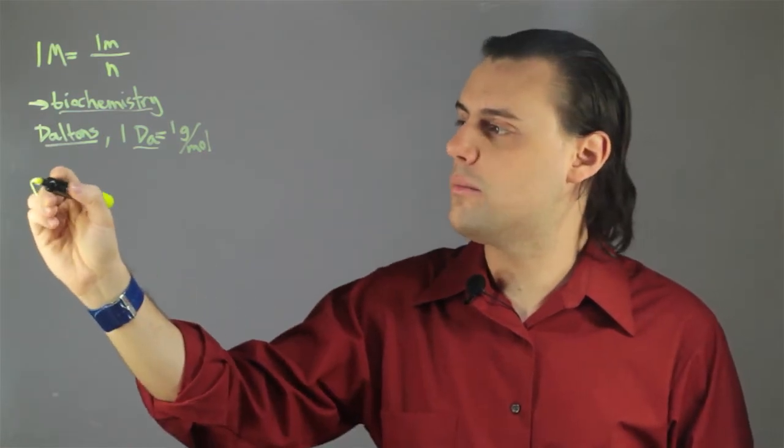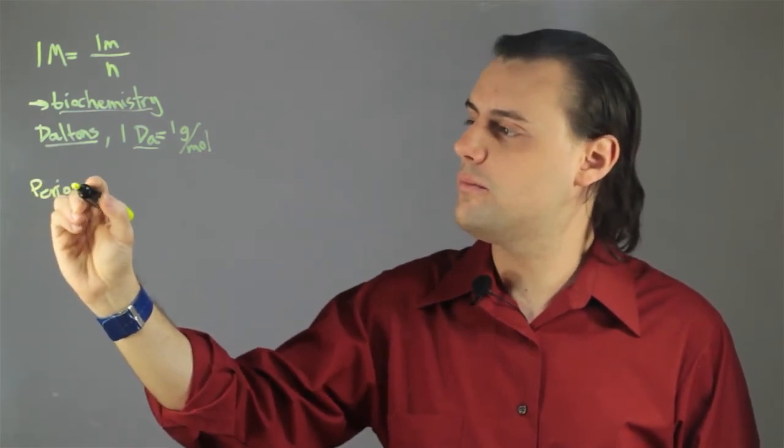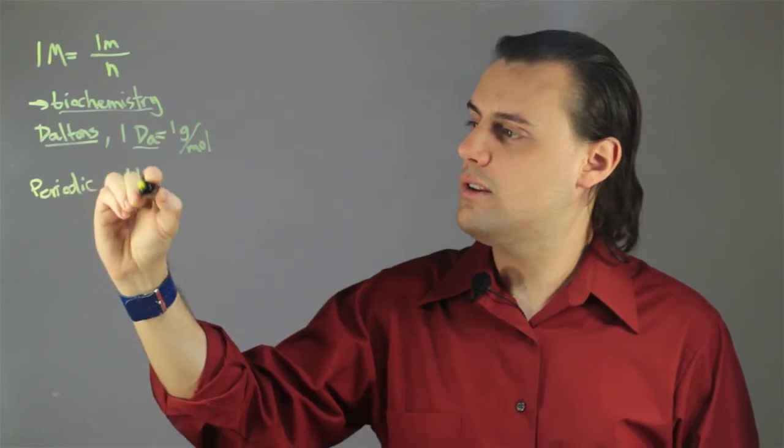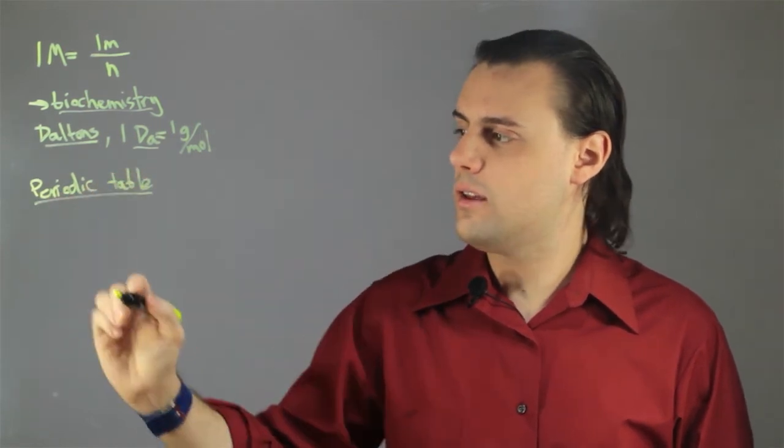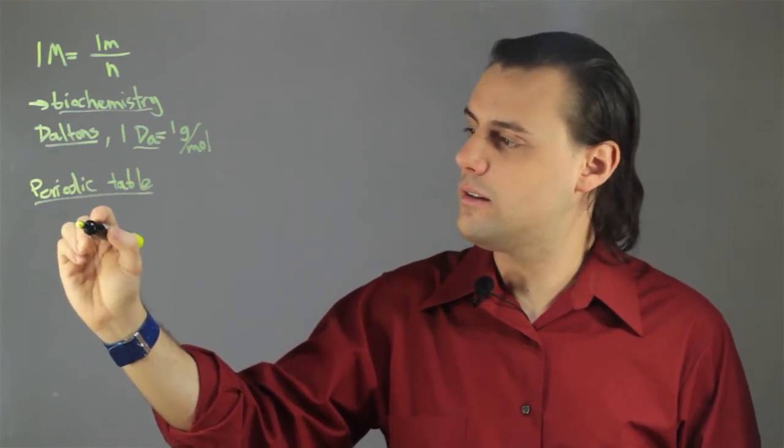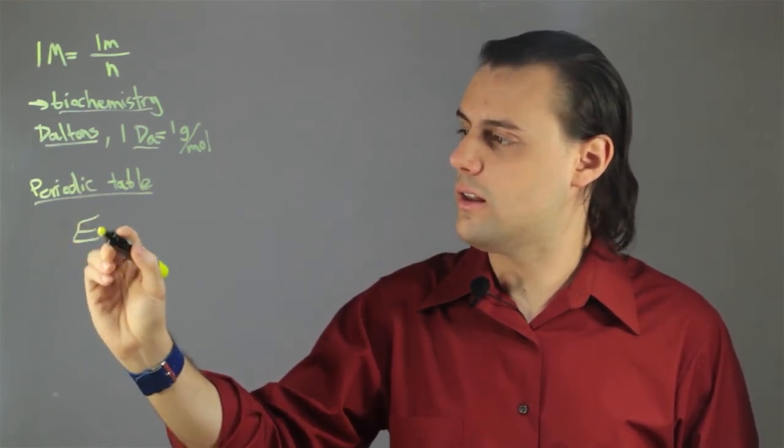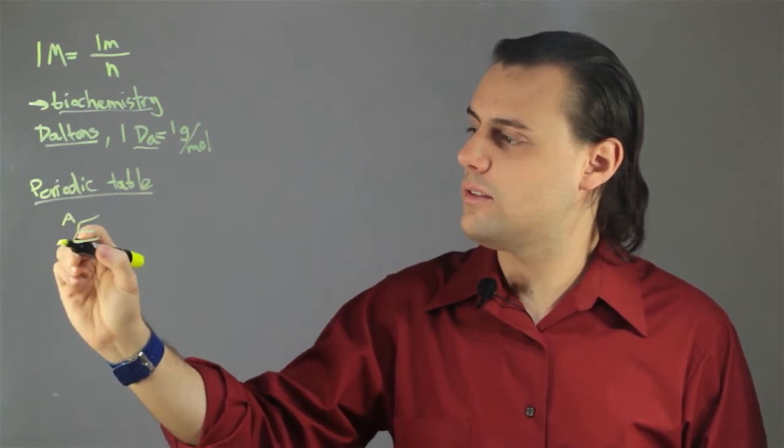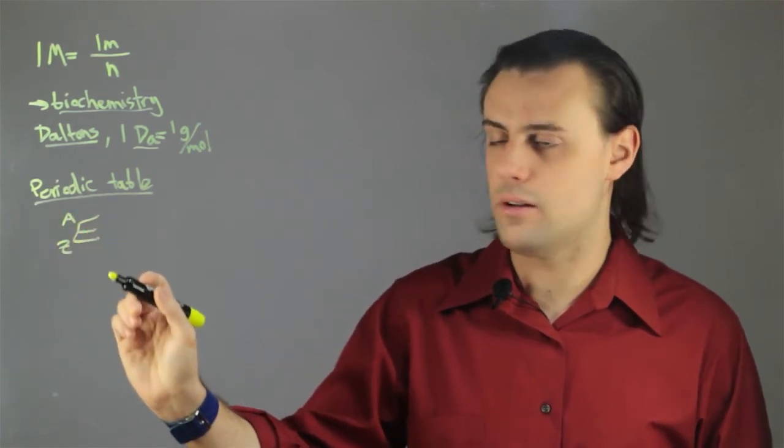If we look at the periodic table of elements, we see that there are trends. Generally, if you have an element, say, a generic element E, with some atomic mass and some element number Z,